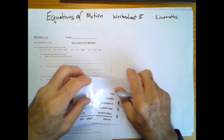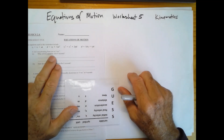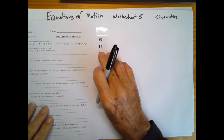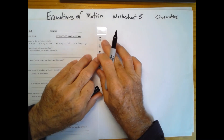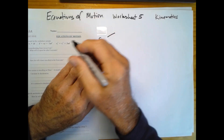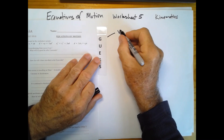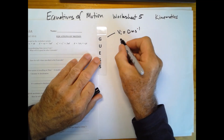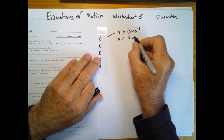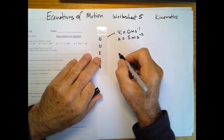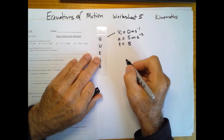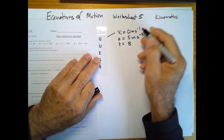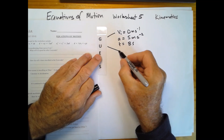Our very first question: a car is accelerating from rest at 5 meters per second squared. What will its speed be after 8 seconds? Let's use our GUESS. Accelerating from rest means the initial velocity is 0 meters per second. The acceleration is 5 meters per second squared. Time t equals 8 seconds. Our unknown is the final velocity v-final.